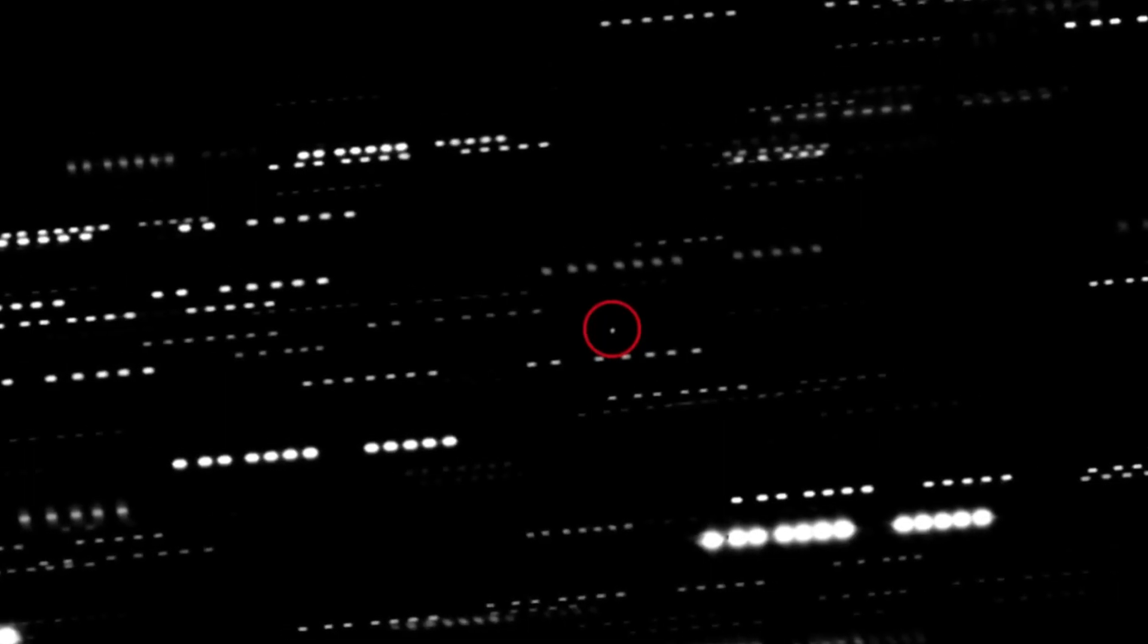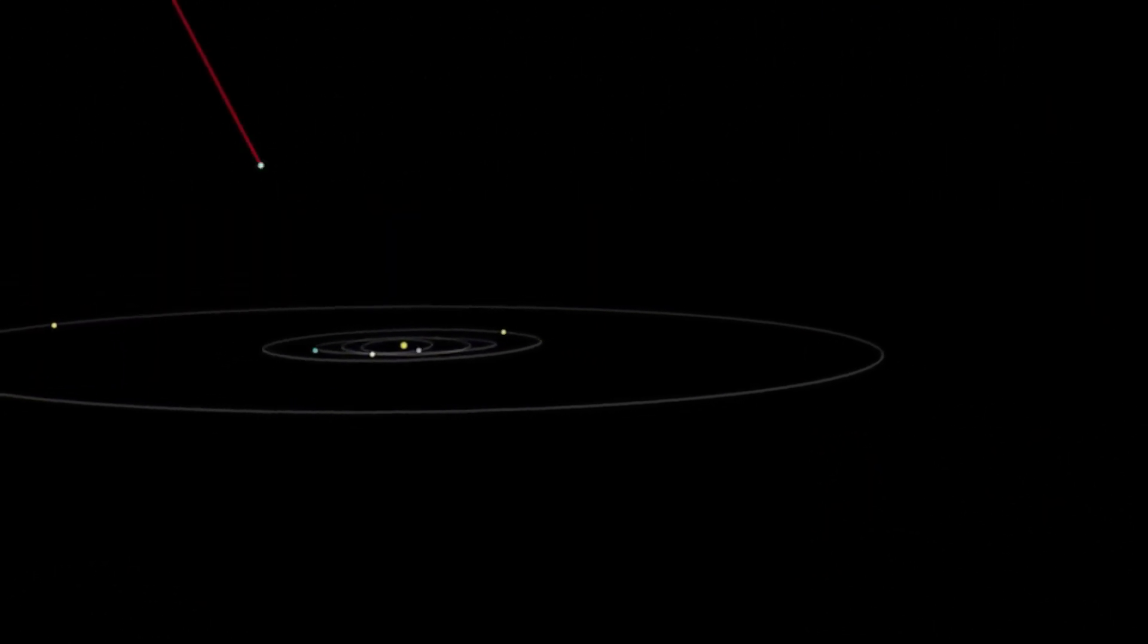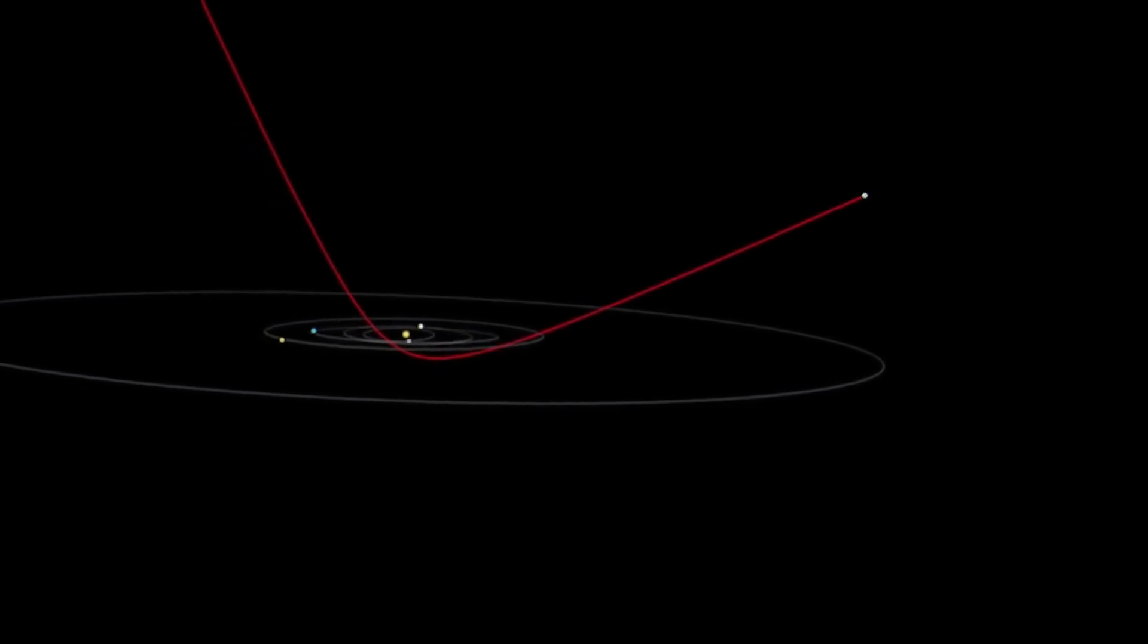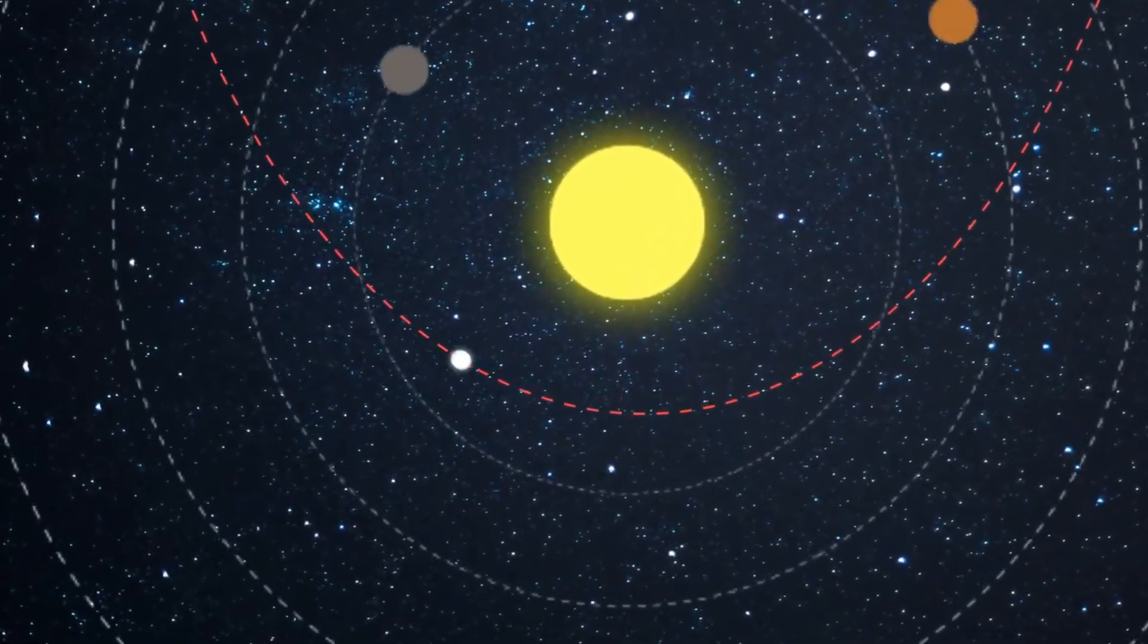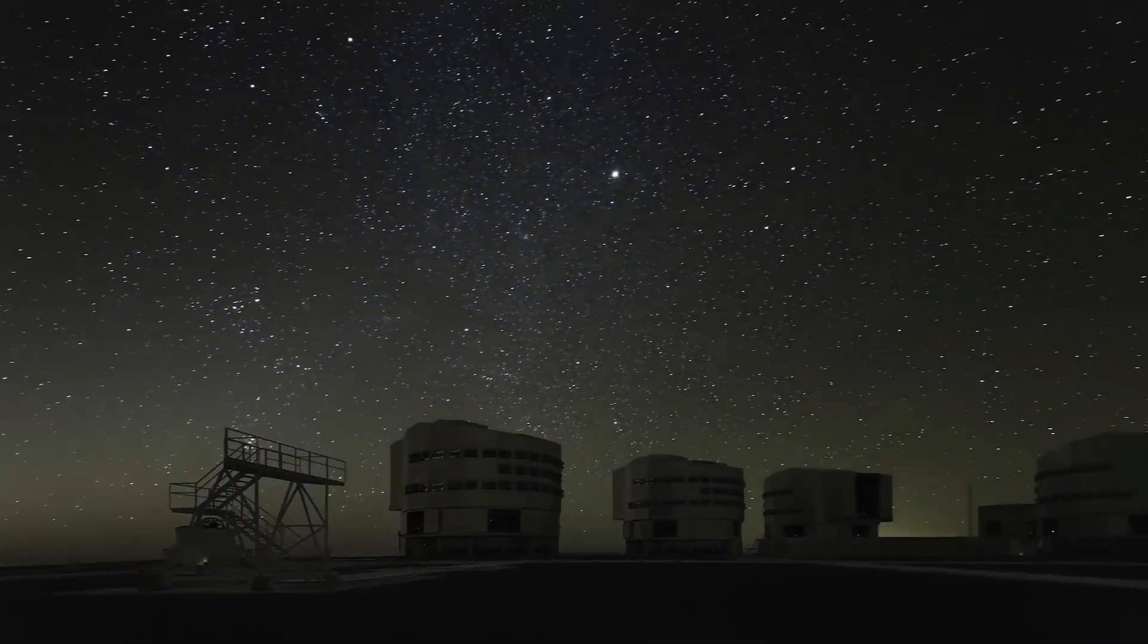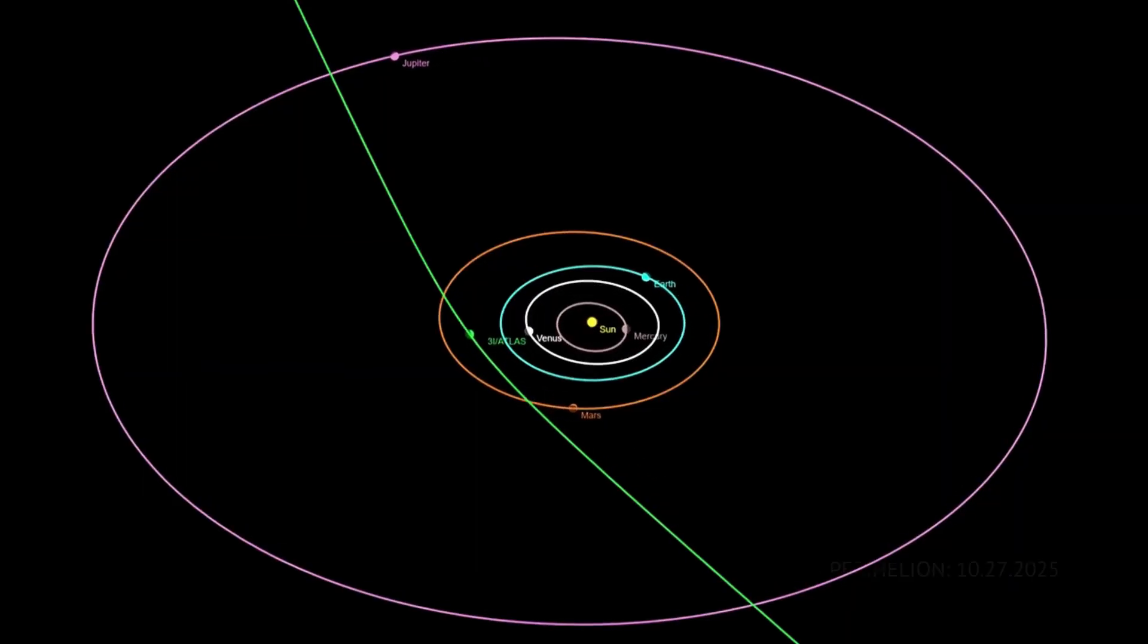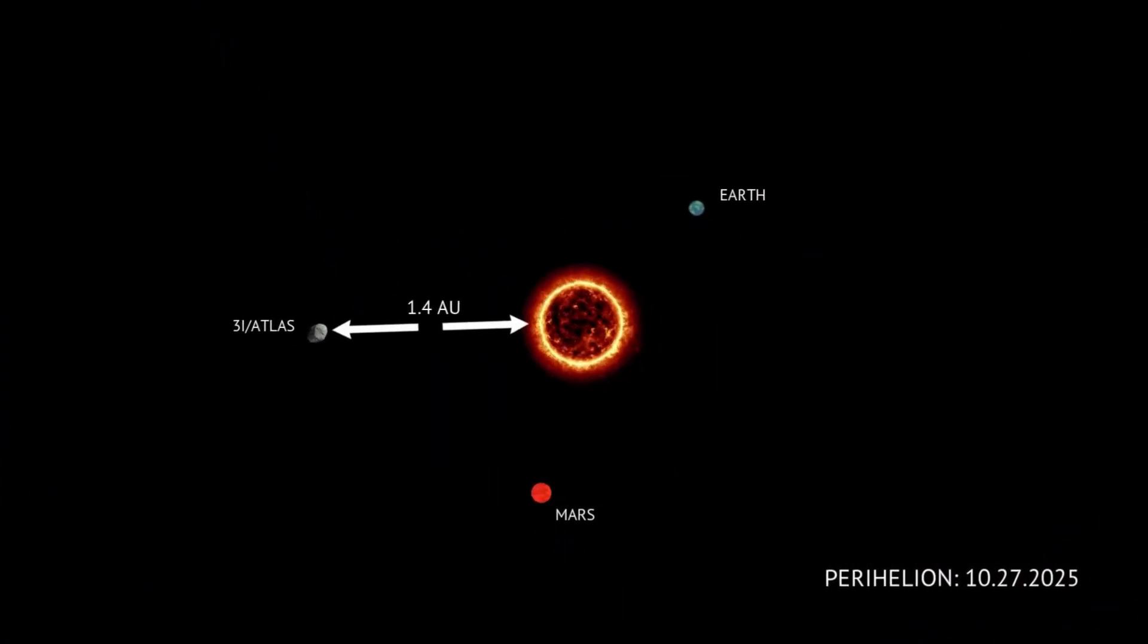The implications extend far beyond astronomy. If even one of these visitors proves to be artificial, it would fundamentally change how humanity views its place in the universe. It would mean that interstellar civilizations exist, that they have the technology for long-range exploration, and that our solar system is of sufficient interest to warrant investigation. So why do humans need to know what 3i Atlas really is? Because the answer will determine whether humanity is looking at the oldest messenger from another star system, carrying secrets about how worlds form across the galaxy, or whether we're witnessing first contact with intelligence beyond Earth.